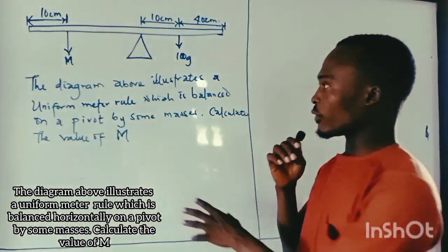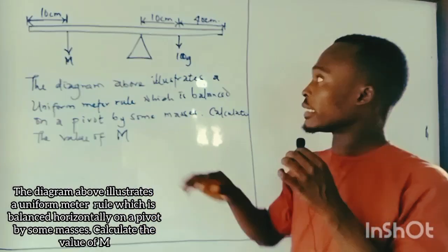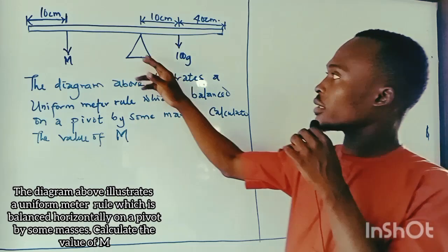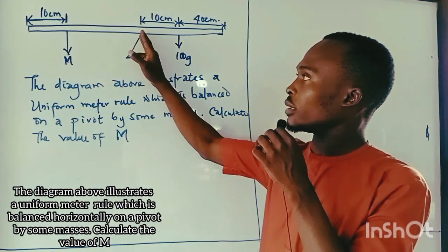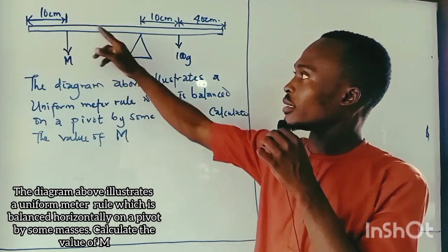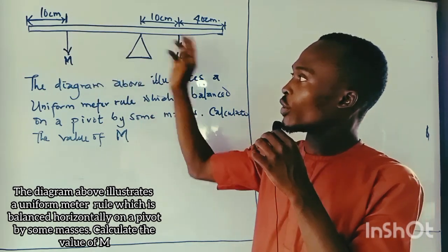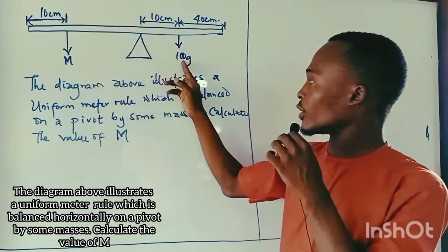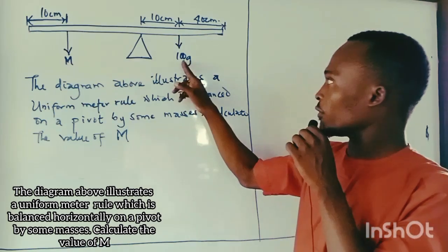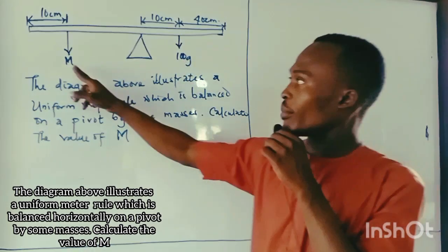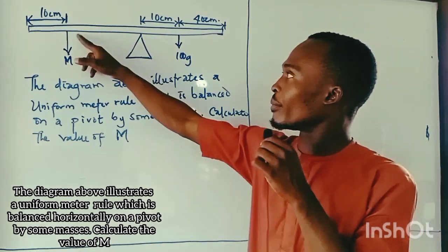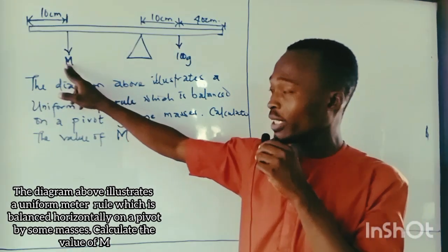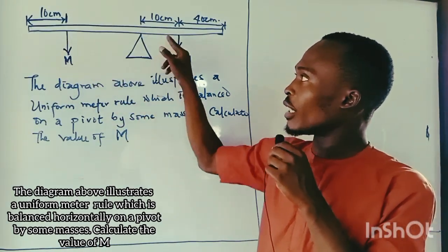What we want to understand in this kind of question is that this meter rule is basically experiencing equilibrium. The pivot is placed at a particular point, and there are some masses used to balance the meter rule so it doesn't fall to either side. We can see a mass of 100 grams and an unknown mass M. The meter rule is balanced completely, and we need to find the mass of the object used to balance it horizontally.